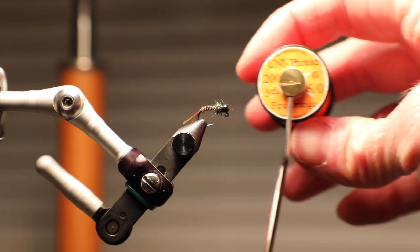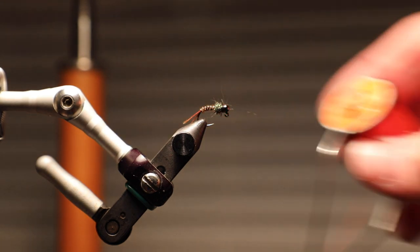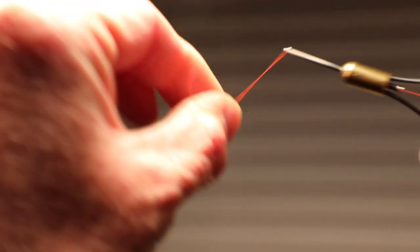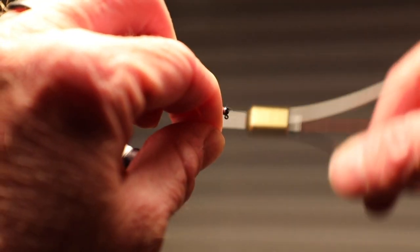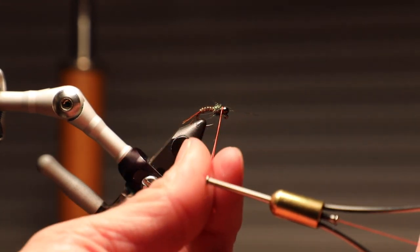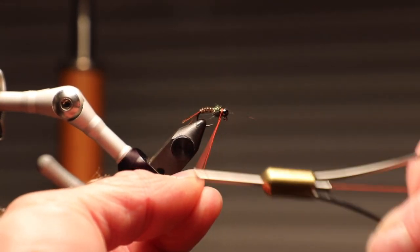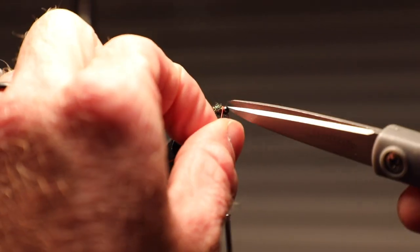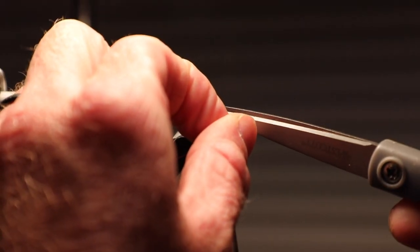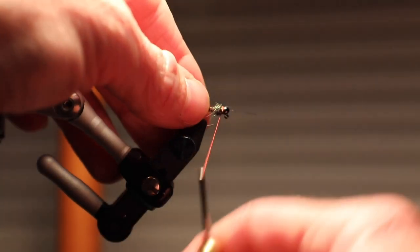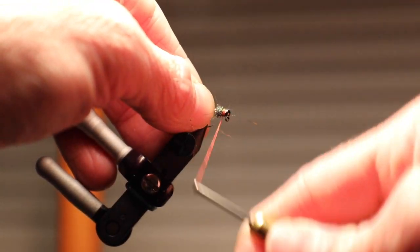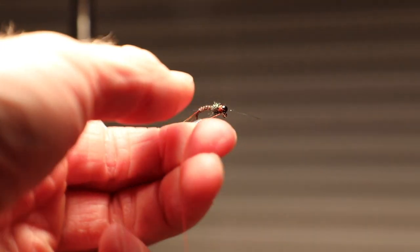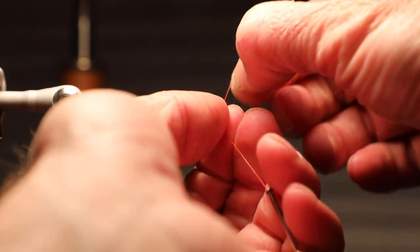For this particular hot spot, I'm going to use some six-aught fire orange unithread. And all I'm going to do is just tie in one, and I'm going to grab that tag in and come around two, three. And I'm going to clip it, give it another turn, maybe two turns, maybe three turns, and I'm going to finish it.